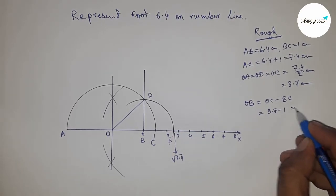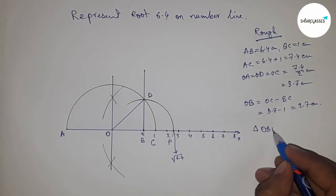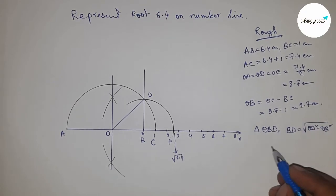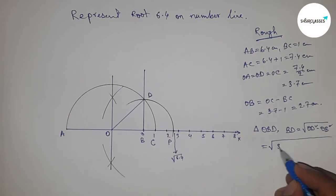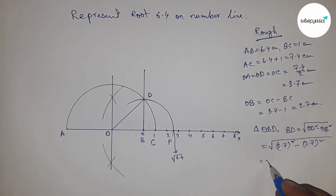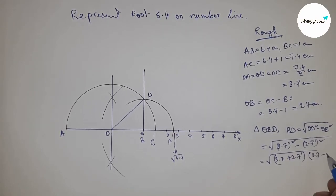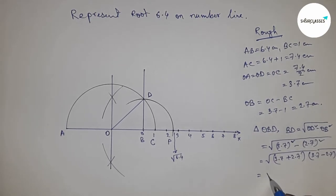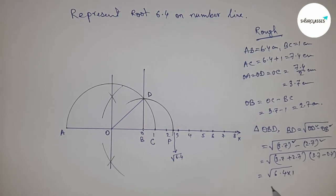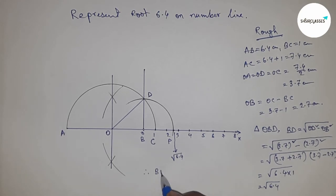In right angle triangle OBD, we can write BD equals square root of OD squared minus OB squared. Now putting the value of OD and OB, and applying the formula a squared minus b squared equals (a plus b) times (a minus b), applying the formula here from this, we get 6.4 times 1. So this is 6.4. Therefore, BD equals root 6.4 centimeters.